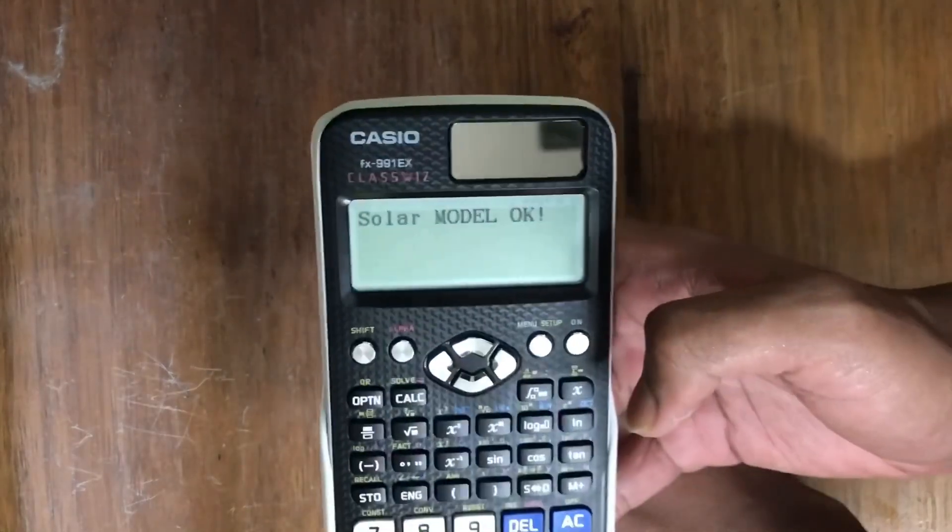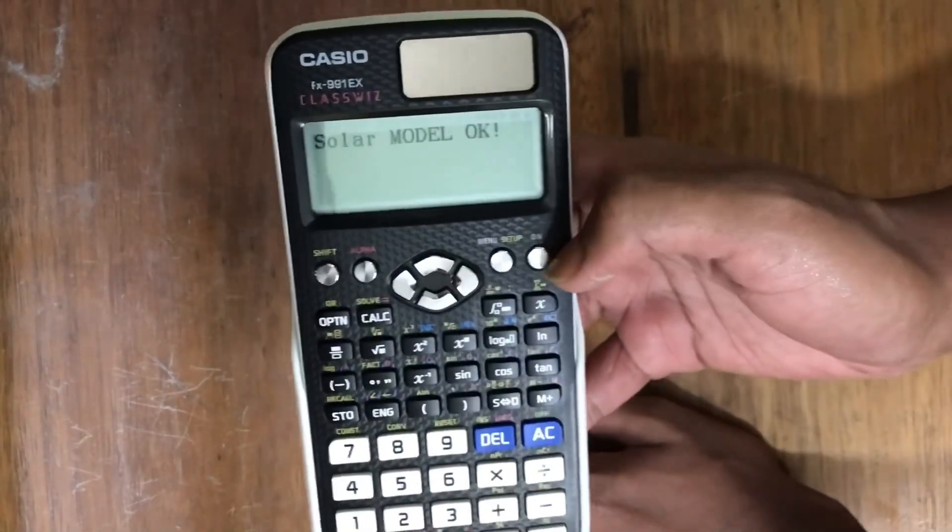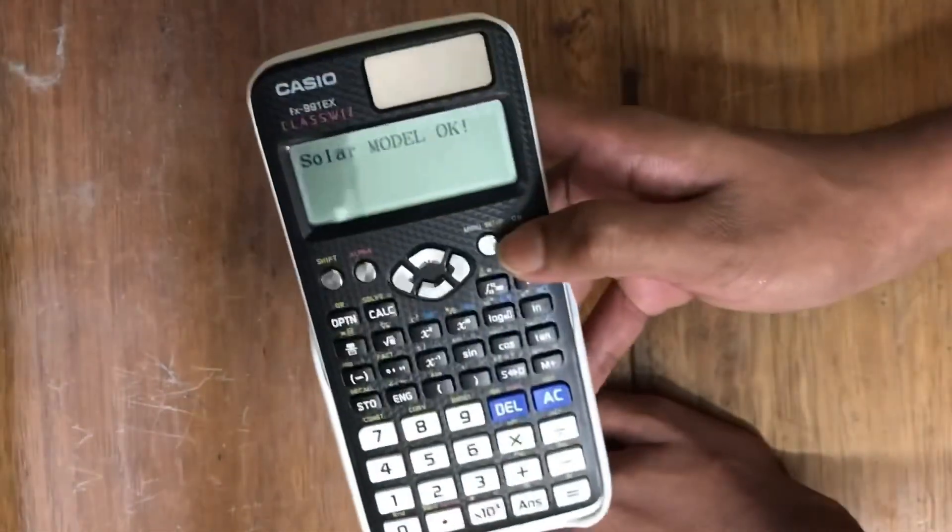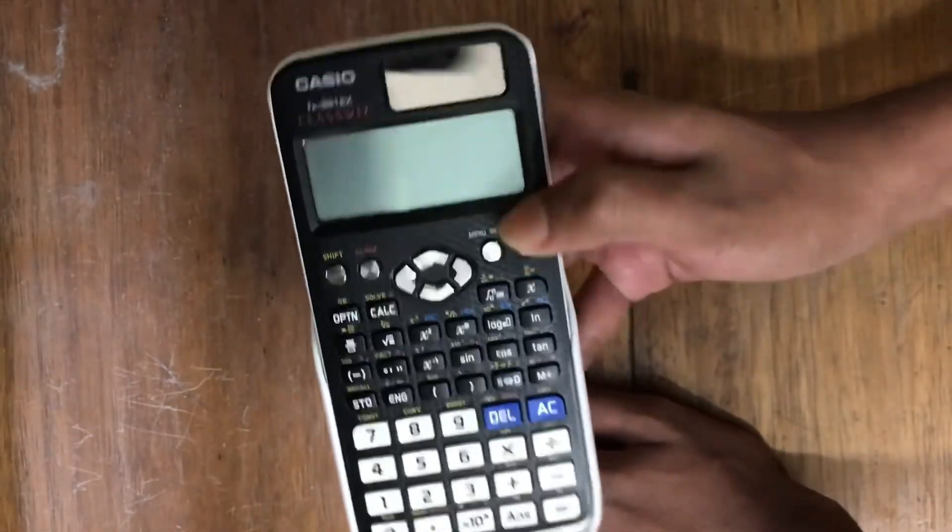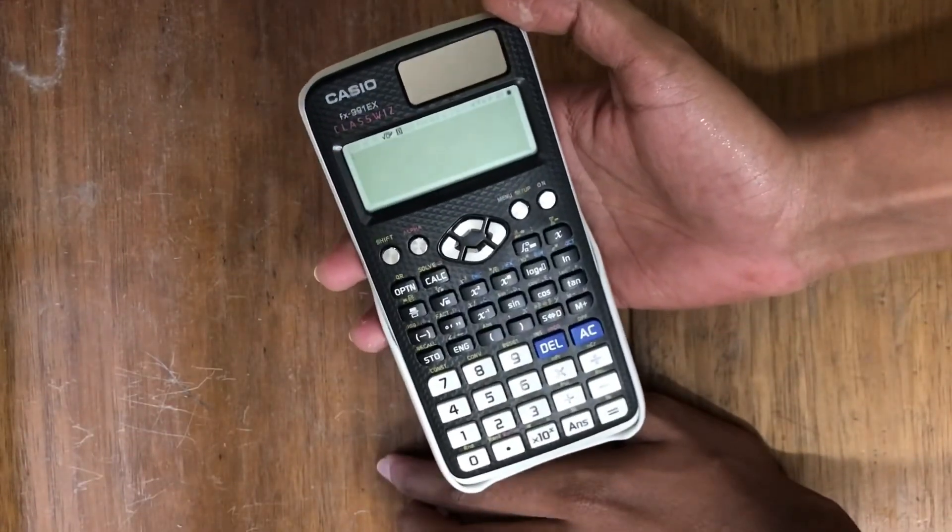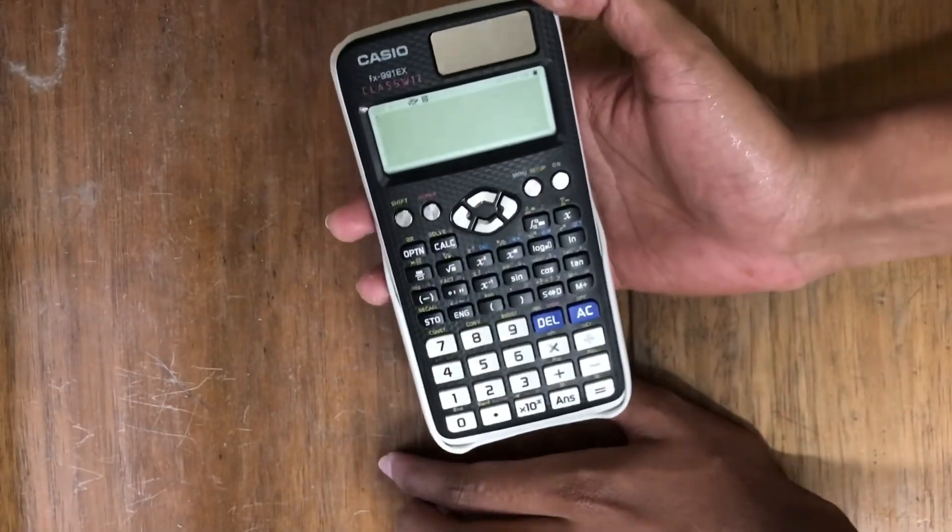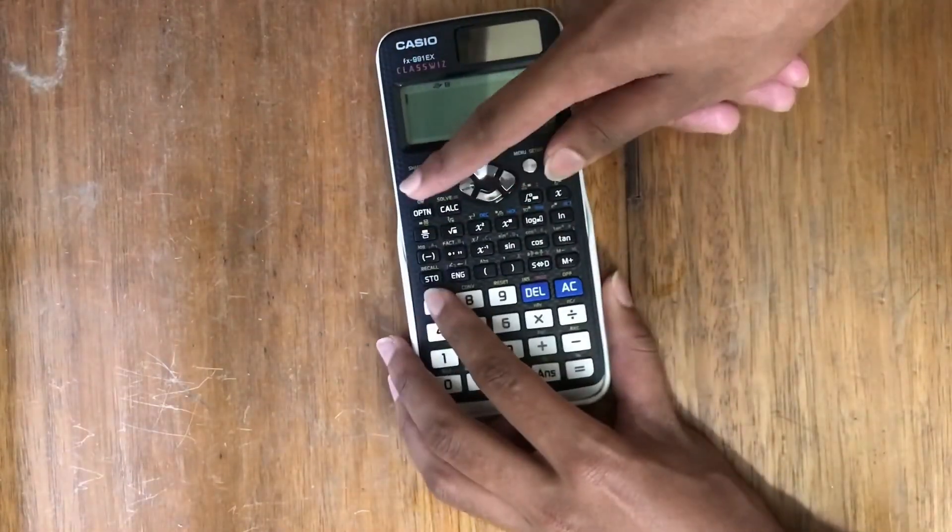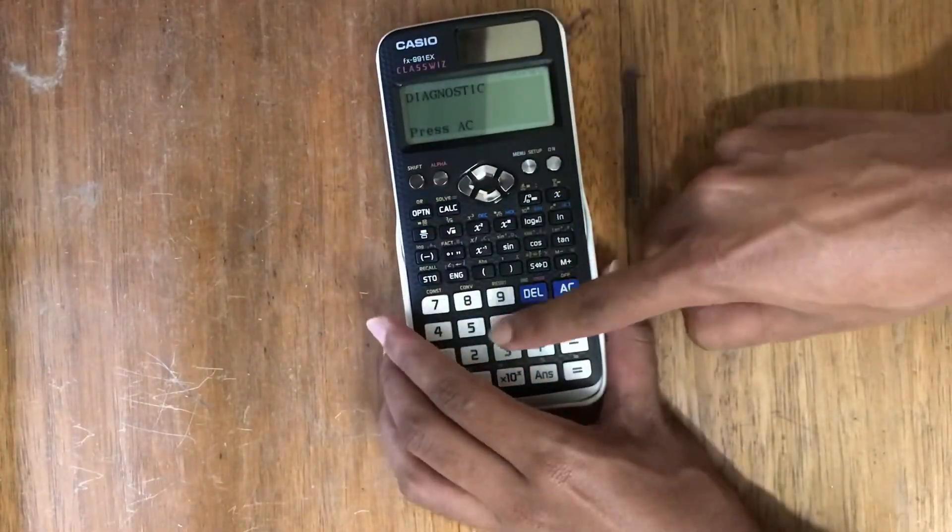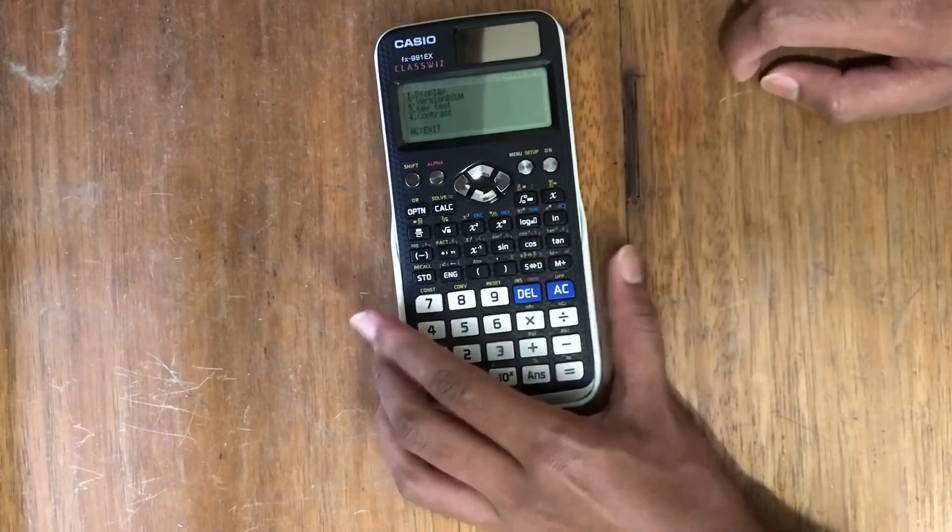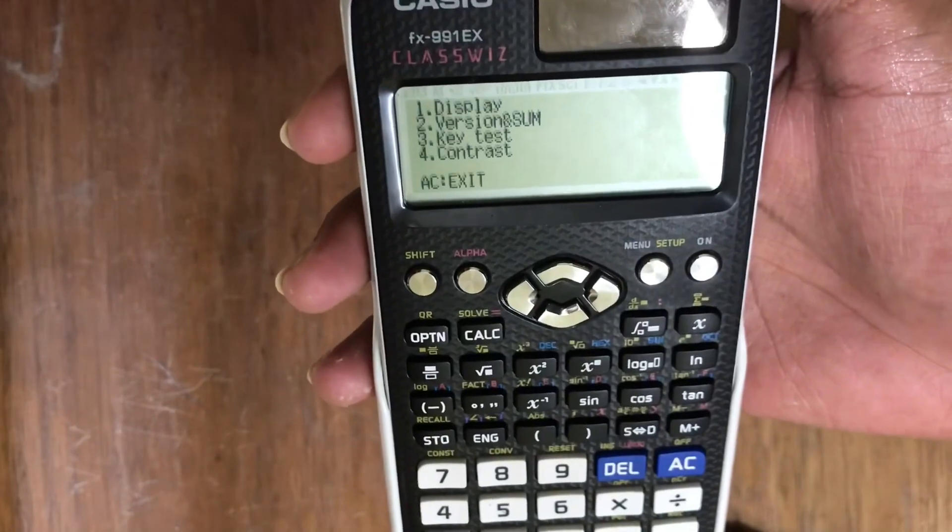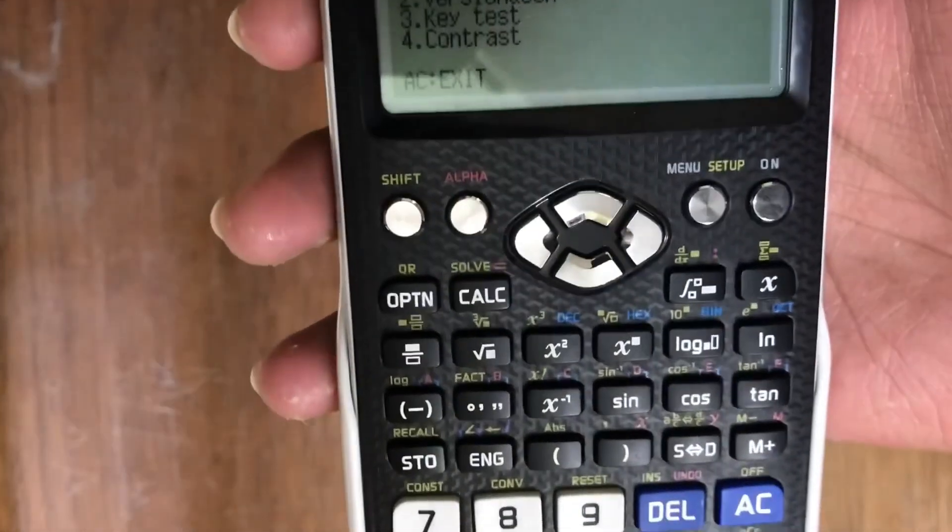So we know it's the real one. Now we go back and we'll check it again. We'll press shift plus seven, then we have to press six.